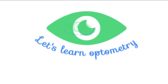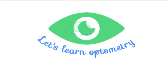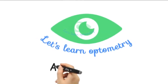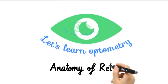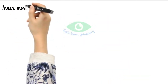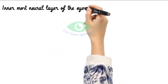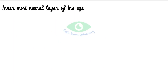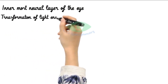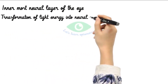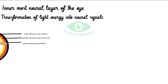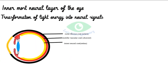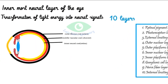Welcome to Let's Learn Optometry. In this video we will see about the anatomy of the retina. The innermost neural layer of the eye is called the retina. It is the site of transformation of light energy into neural signals. It is located between the choroid and the vitreous, and it has 10 layers.